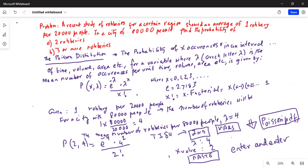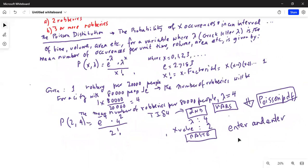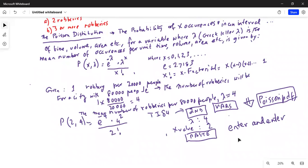And the answer is 0.1465. So probability of 2 robberies with lambda equal to 4 is 0.1465. And that is the answer for part A.